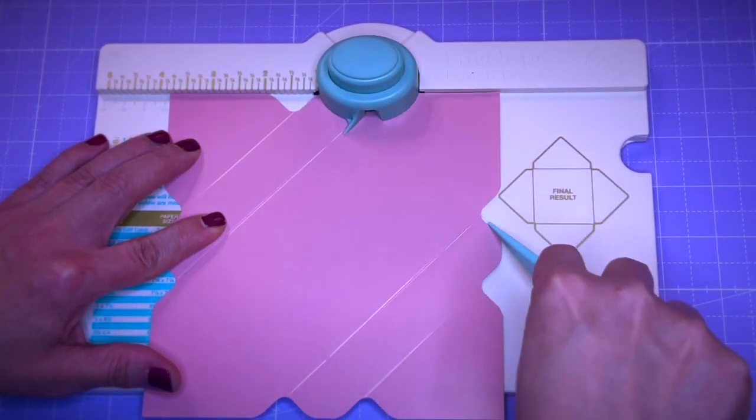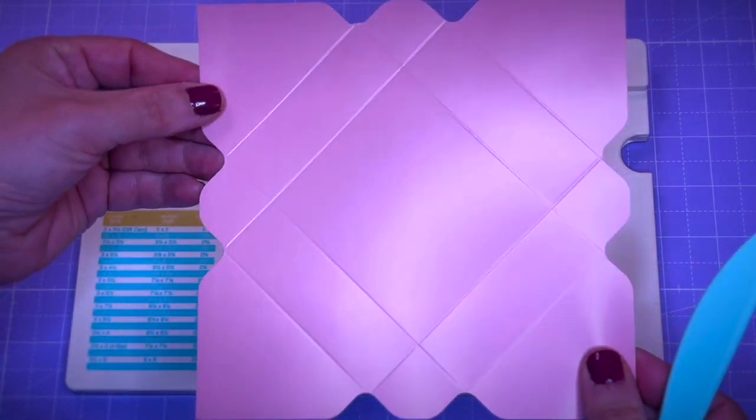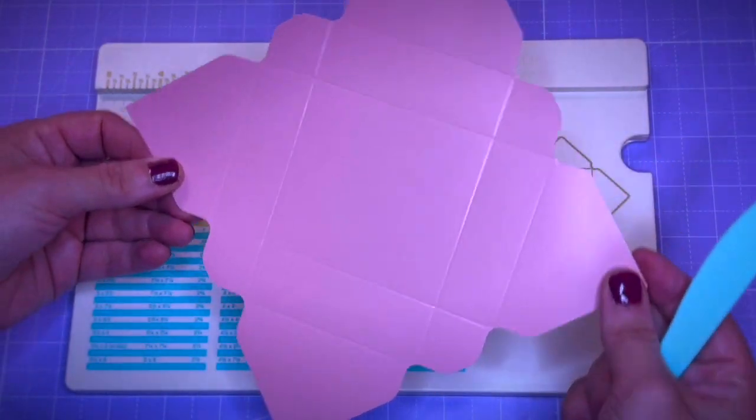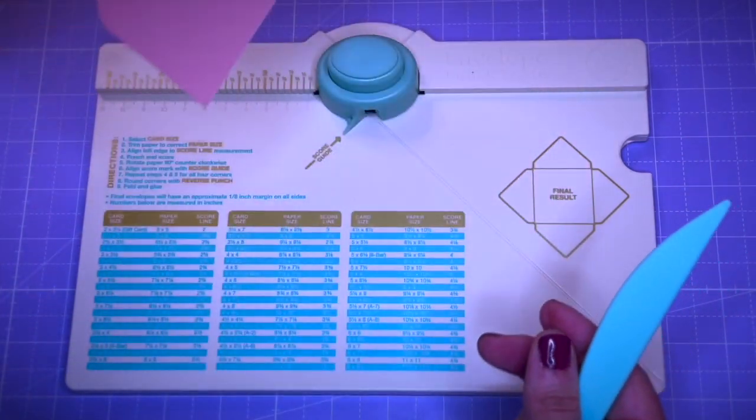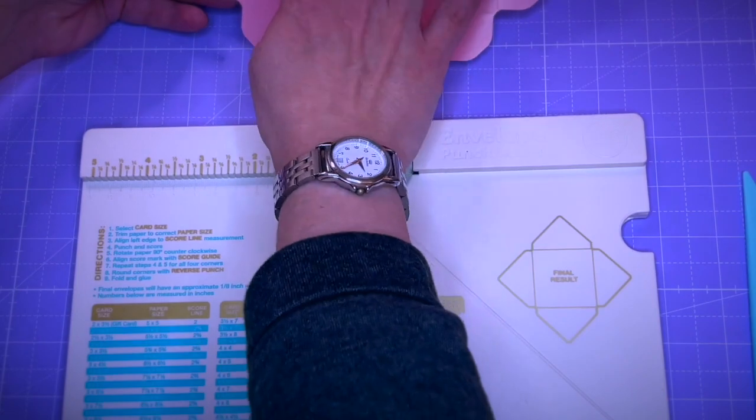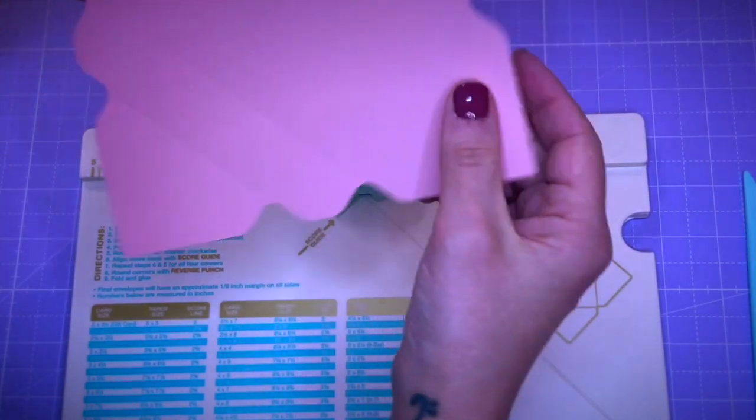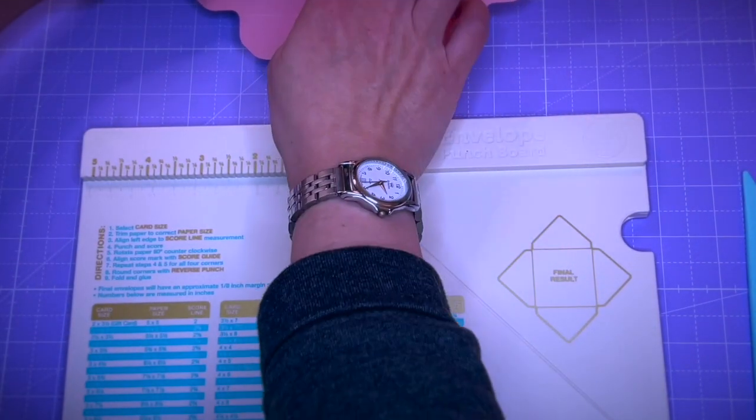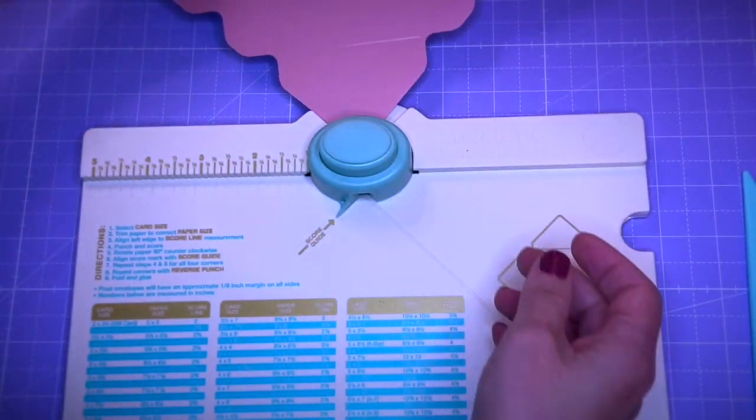Now you can see the score pattern on the paper indicating where the box will be folded. Now with the reverse punch on the back of the punch board, I am going to go ahead and round all the corners. This just gives it a little extra if you wish to.